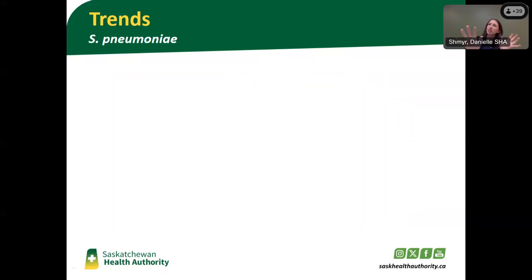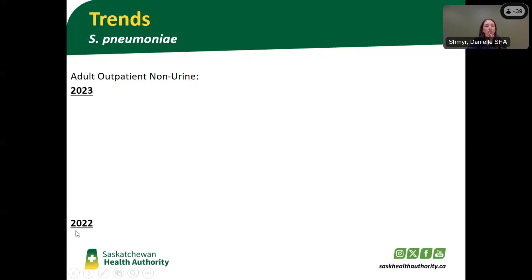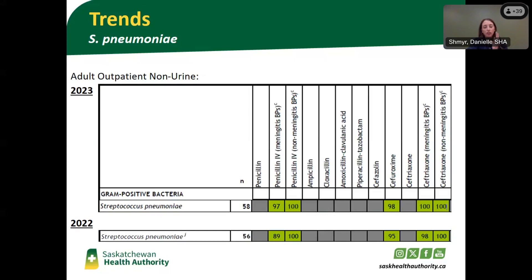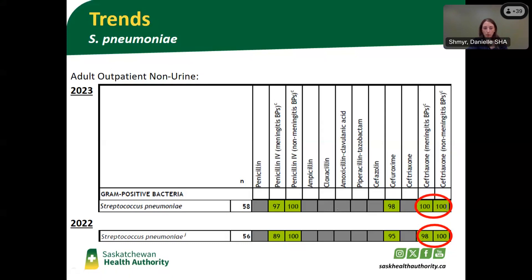Moving on to another positive note — throughout this presentation you'll see the 2022 data compared to 2023. What I wanted to highlight is that year over year, our susceptibility of Streptococcus pneumoniae to ceftriaxone, whether at meningitic or non-meningitic breakpoints, is essentially 100%. This is from a community-acquired non-urinary sample — so this might be bloodstream or a respiratory sample — and we are seeing basically 100% susceptibility to ceftriaxone even at meningitic breakpoints.